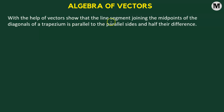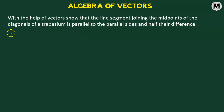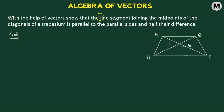With the help of vectors, show that the line segment joining the midpoints of the diagonals of a trapezium is parallel to the parallel sides and half the difference. Let us begin by understanding the problem graphically.